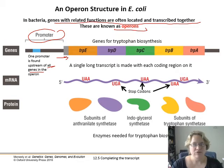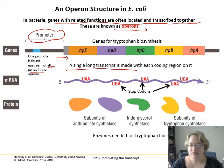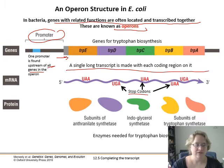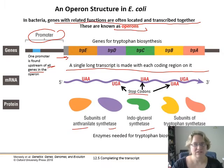That's probably pretty evolutionarily advantageous. You get this one long transcript with each coding region on it. There are multiple stop codons, so you'll make these different subunits of related proteins all in one go, and you'll make them in exactly the proportion you need in order to make tryptophan.